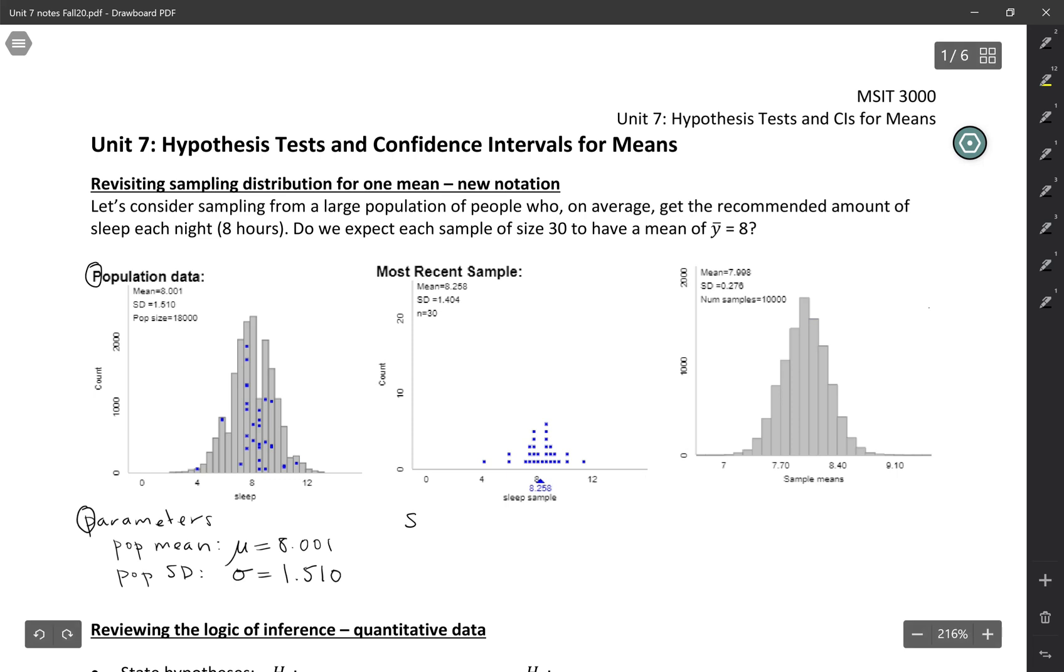So numbers that describe the sample are called statistics. Again, conveniently, they both start with s. Statistics are numbers that describe the sample. And we have the sample mean. I'm going to introduce a new symbol for that. I'm going to use y bar for the mean. So the sample mean y bar is 8.258.